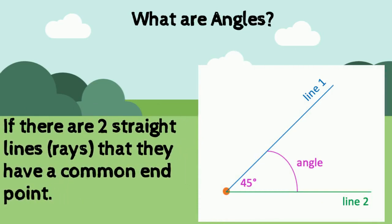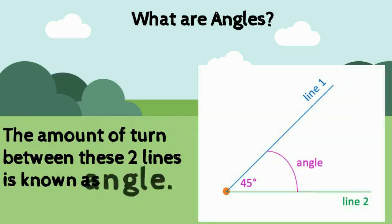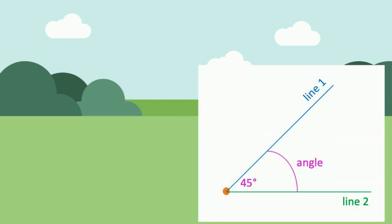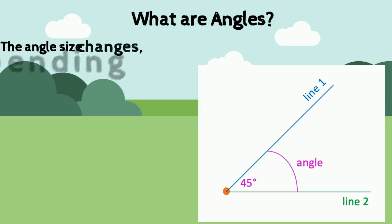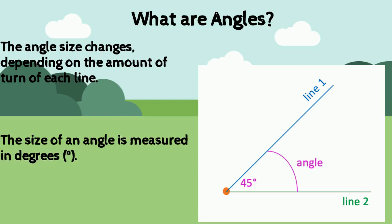Angles are formed when two straight lines — which we call rays — meet at a common end point. The amount of turn between these two lines is known as an angle. The size of an angle changes depending on the amount of turn of each of those straight lines. The size of an angle is measured in degrees.